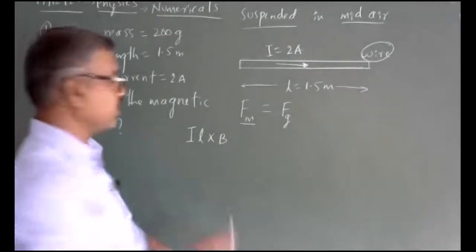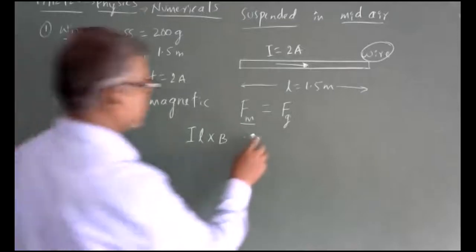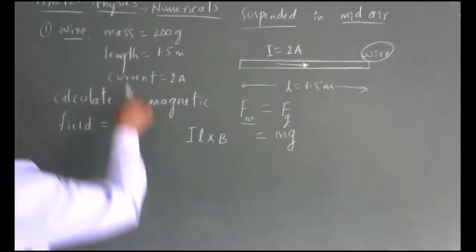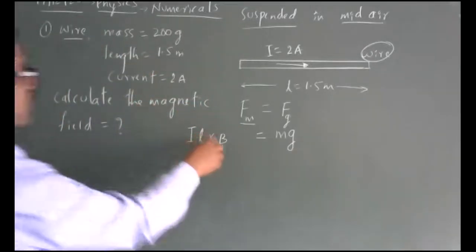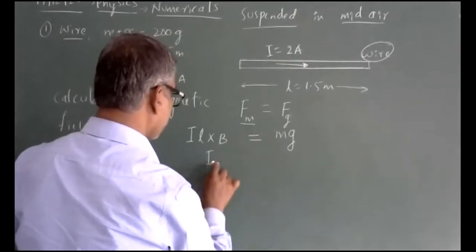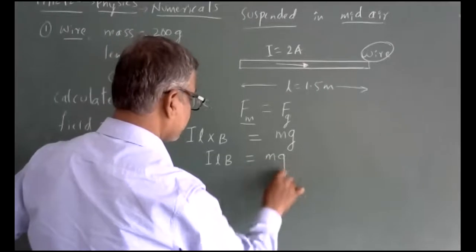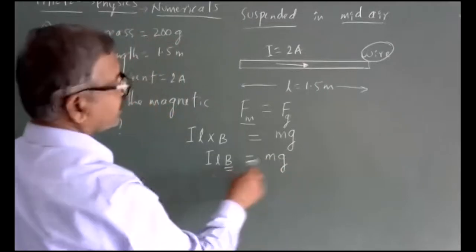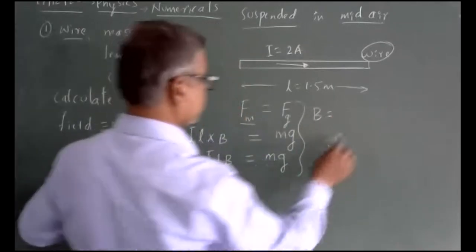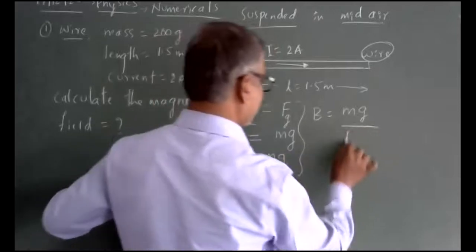Since we have a cross product, mathematically this simplifies to F = ILB. The gravitational force is mass times gravity, M×G. When the wire is suspended in mid-air, this equation simply reduces to ILB = MG. So we need to calculate the magnetic field B.